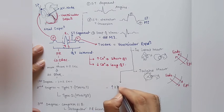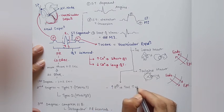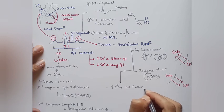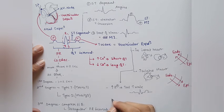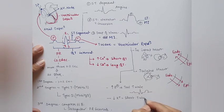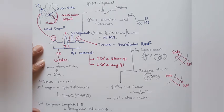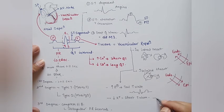The T wave is also related to potassium levels in the blood. If potassium is high — hyperkalemia — we have a tall T wave. If there is hypokalemia — low potassium — we have a short T wave with lesser height.